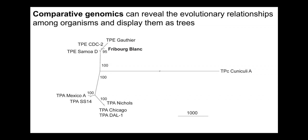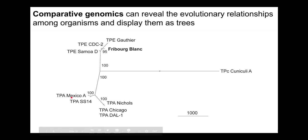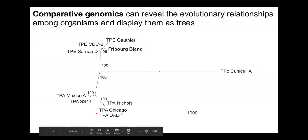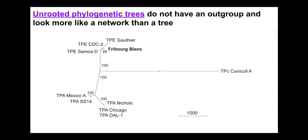A recent study plotted different strains of syphilis and yaws and compared them to other organisms. Down here are TPA — Treponema pallidum subspecies pallidum — where each name is a different strain isolated from a different patient with syphilis. Up here are different yaws strains. This is within a subspecies; strains represent different populations or variants. This is all presented as an unrooted phylogenetic tree.